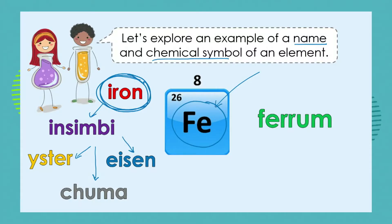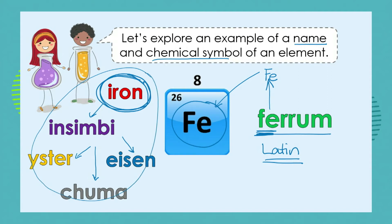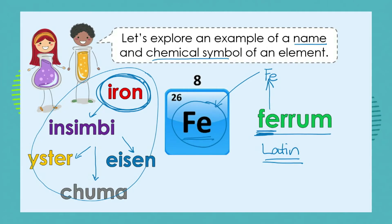So in the periodic table, what we do is we have a universal symbol for that particular substance. The element iron has the symbol Fe. And where does that Fe come from? It comes from the Latin word for iron, which is ferrum. So the first two letters of the Latin name are used as the symbol for iron. Our periodic table makes sure that it crosses all language barriers by giving a universal symbol to that particular element.